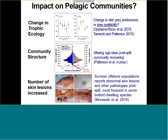Initial studies showed indicators that these communities were impacted. Stable isotope analyses showed a change in trophic ecology — both fish communities, which are not directly linked, showed changes in their diet. There was also a change in community structure, especially in the shallow water fish communities, and an increase in the number of skin lesions especially on the continental slope fish communities, indicating their health was probably affected after the oil spill.